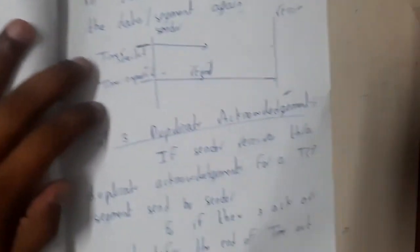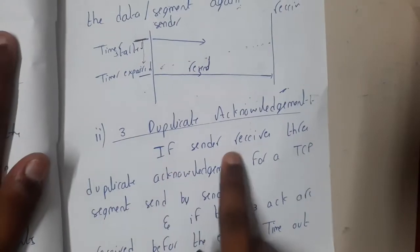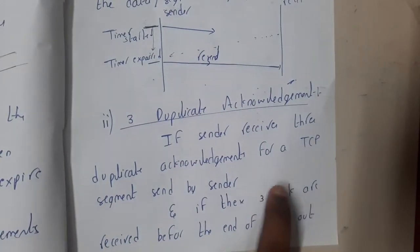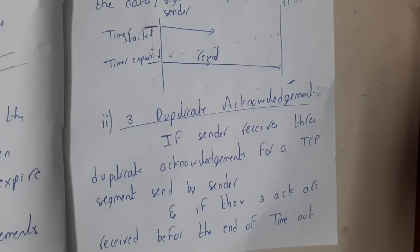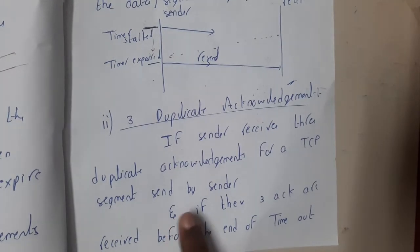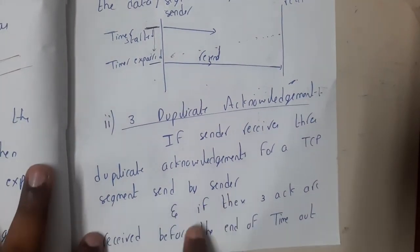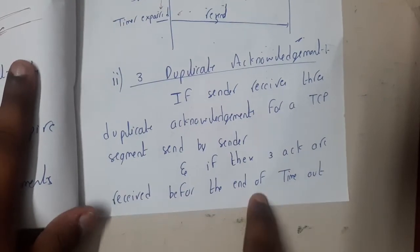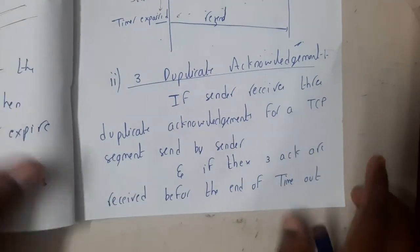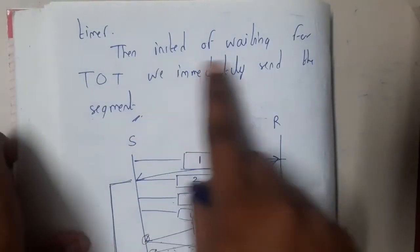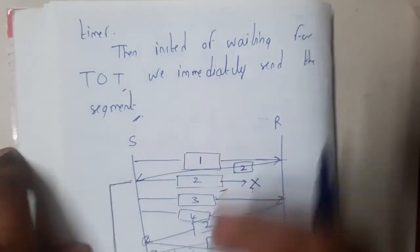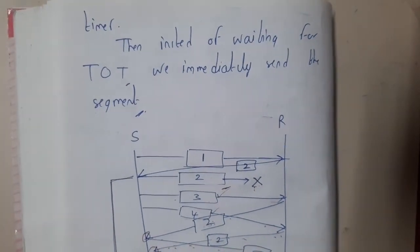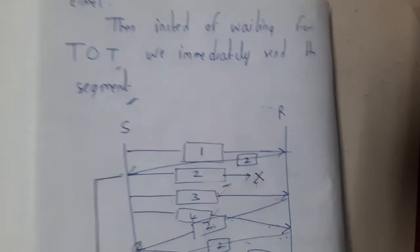Formally: if a sender receives three duplicate acknowledgements for a TCP segment before the timeout timer expires, instead of waiting for the timeout, the sender immediately retransmits that segment.